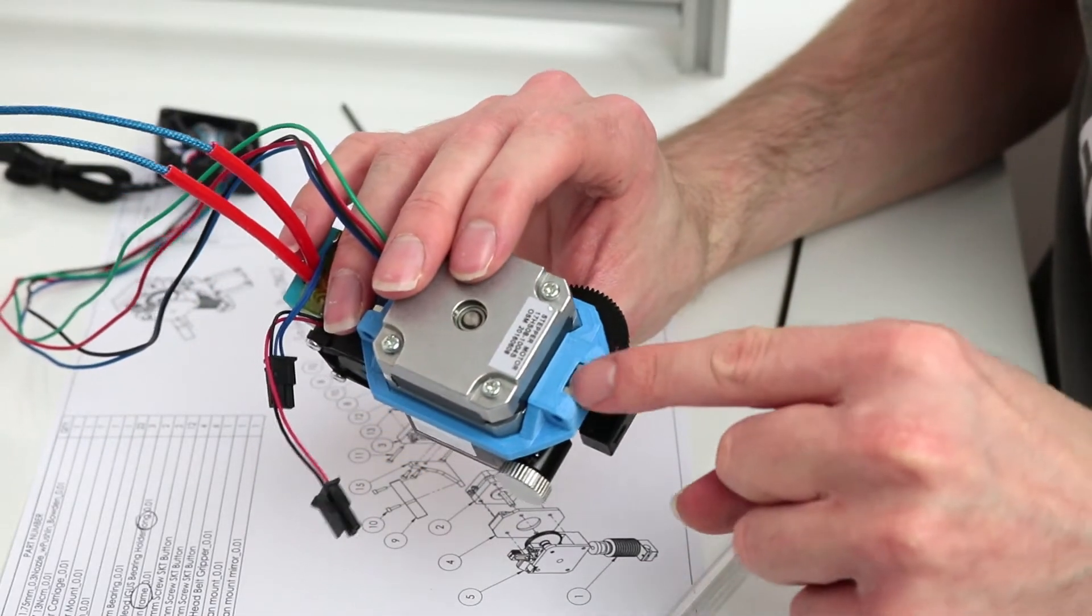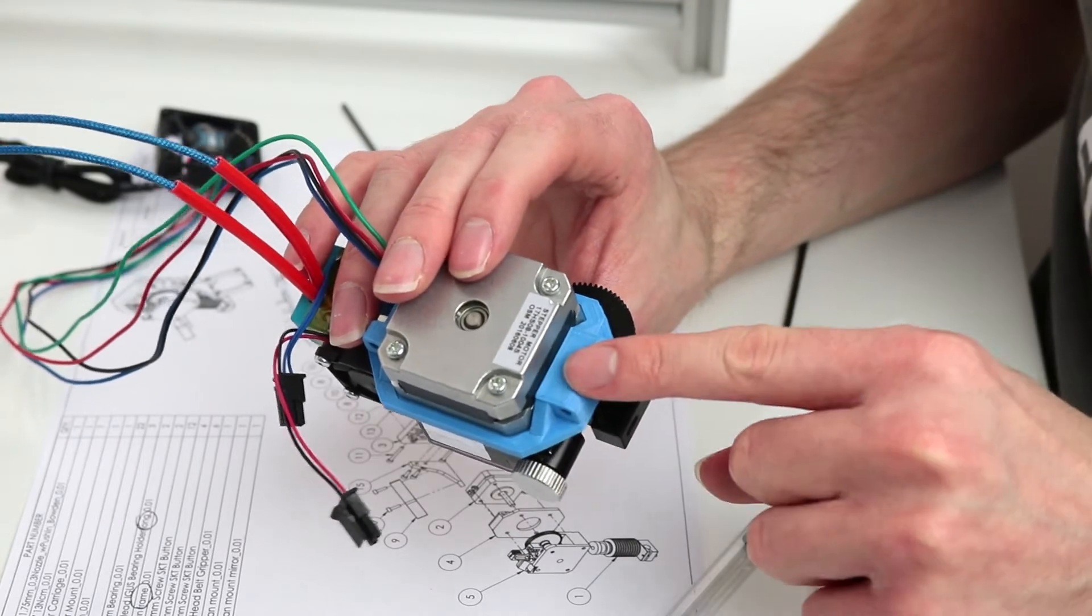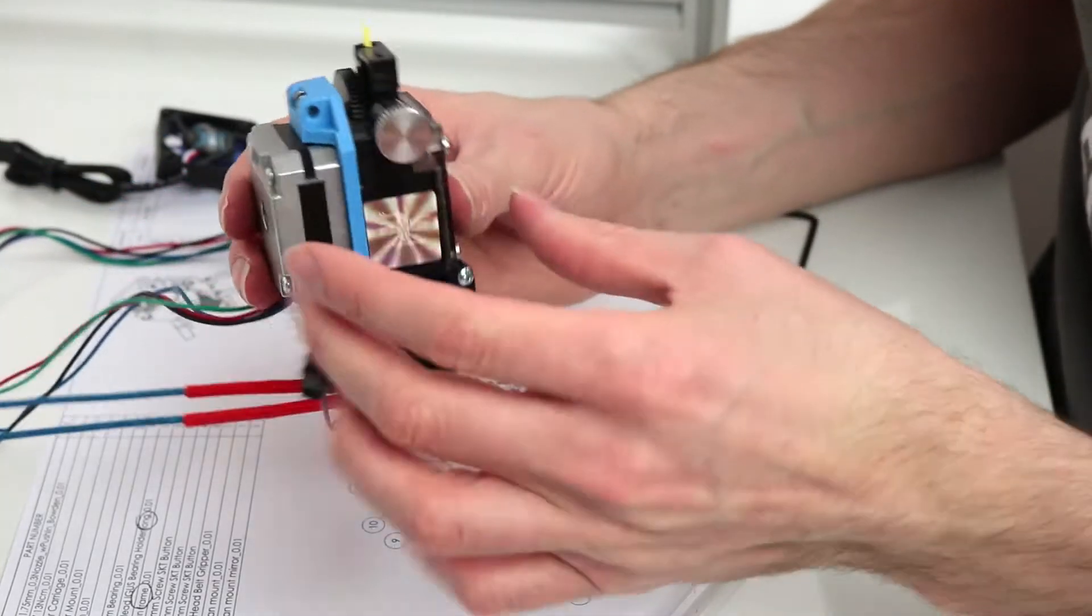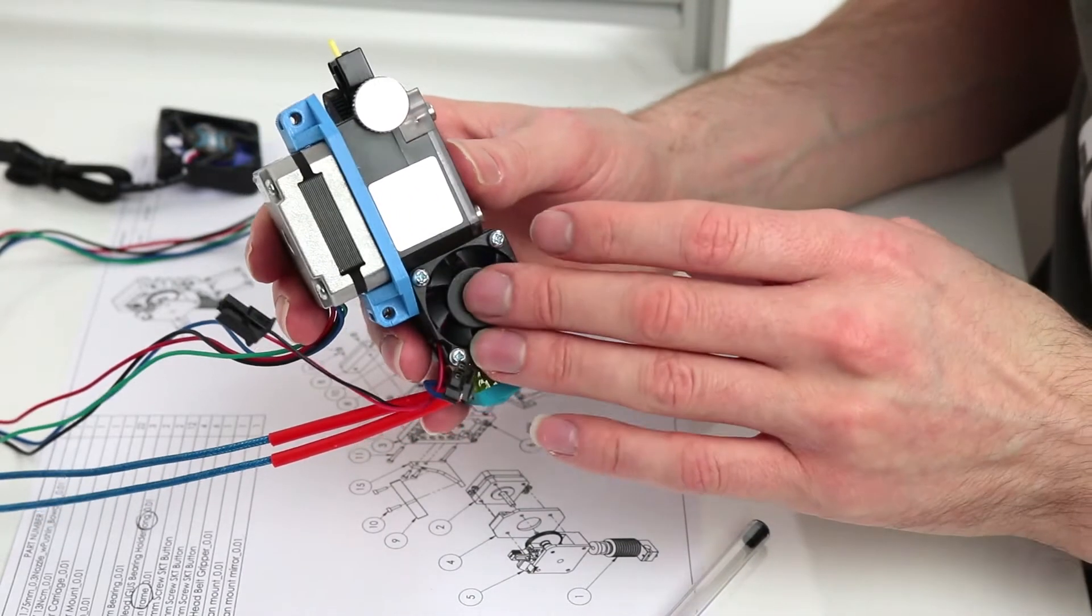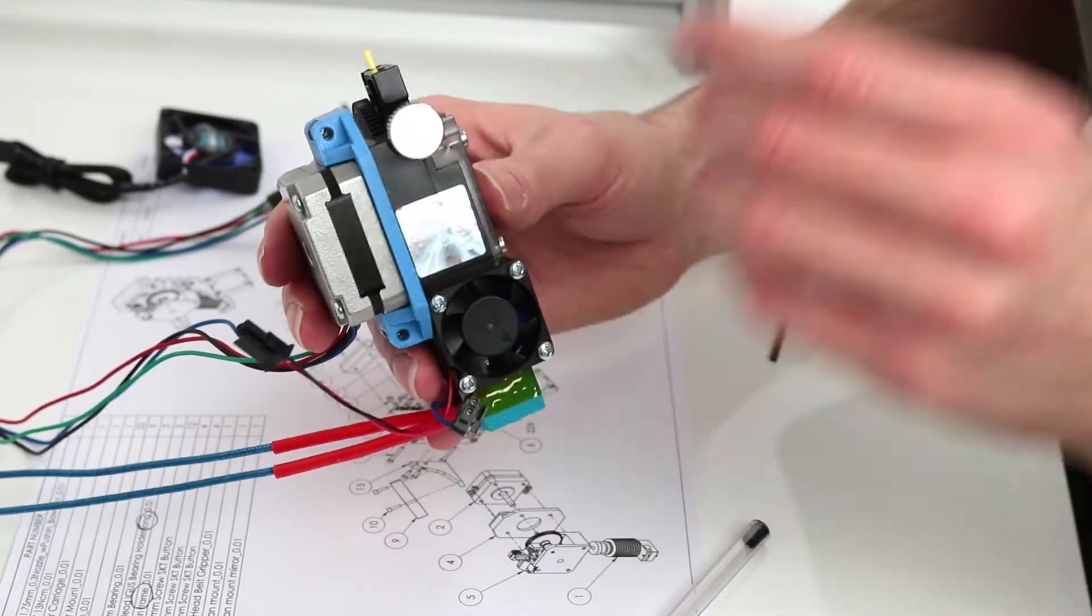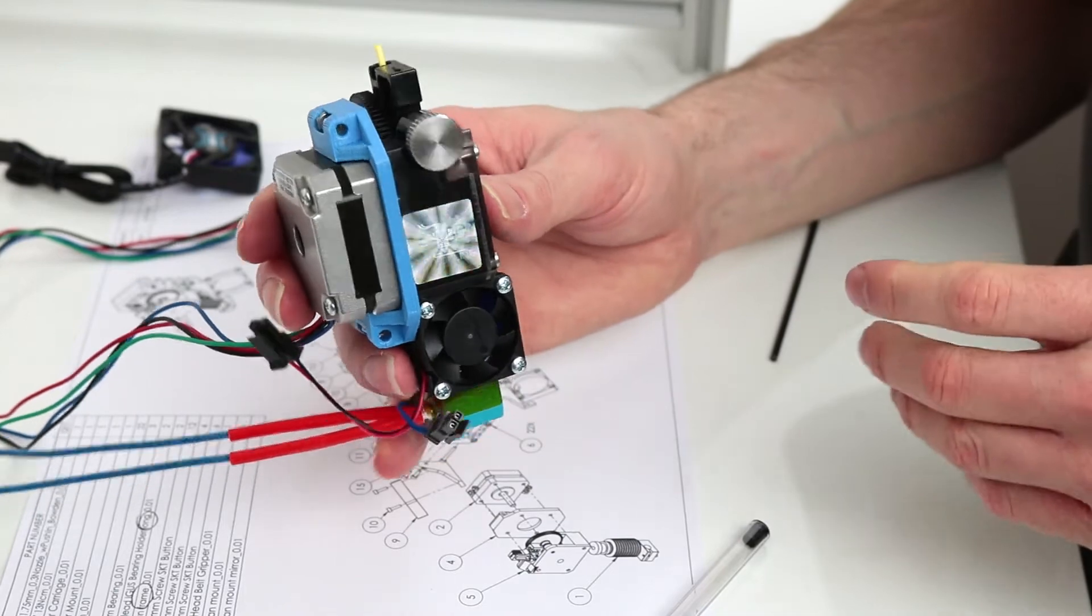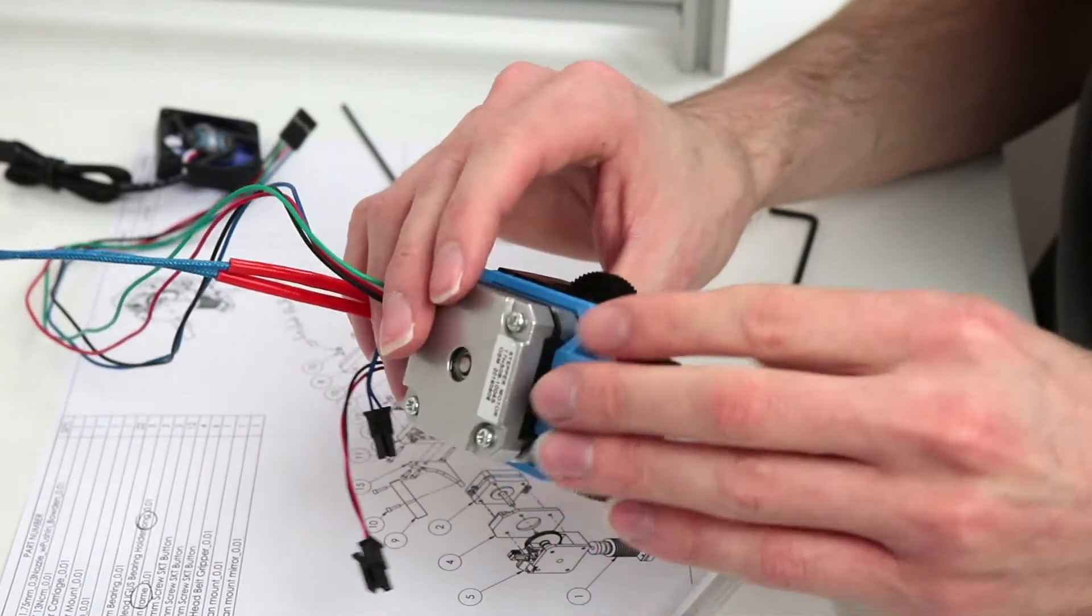So we've started by putting these nuts into the plastic frame, and then you can go ahead and put the extruder, the Titan E3D hot end and stepper motor together, and then that assembly is ready to fix to the carriage.